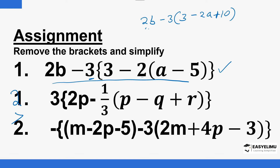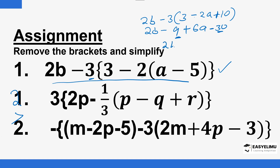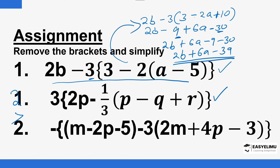Now we open the outer bracket. We have 2b, then minus — 3 times 3 is 9, and the sign changes because of the minus so it becomes plus 6a. The plus sign changes to minus, giving minus 30. Now collect the like terms: we have 2b plus 6a, and then the constants minus 9 minus 30, which is minus 39. So the final answer is 2b plus 6a minus 39. You can attempt number two and number three. That marks the end of our lesson — until next time, goodbye.